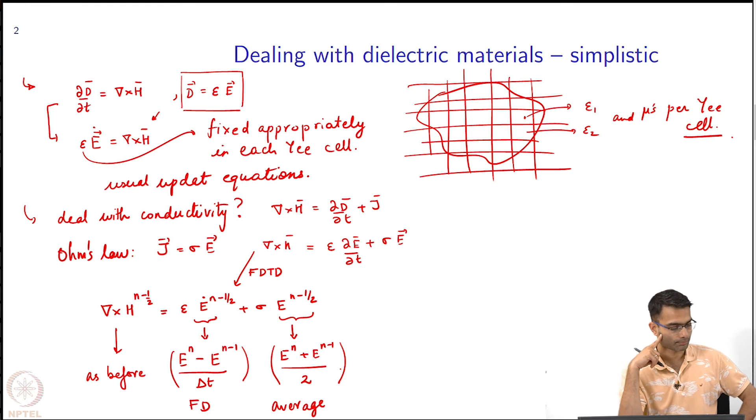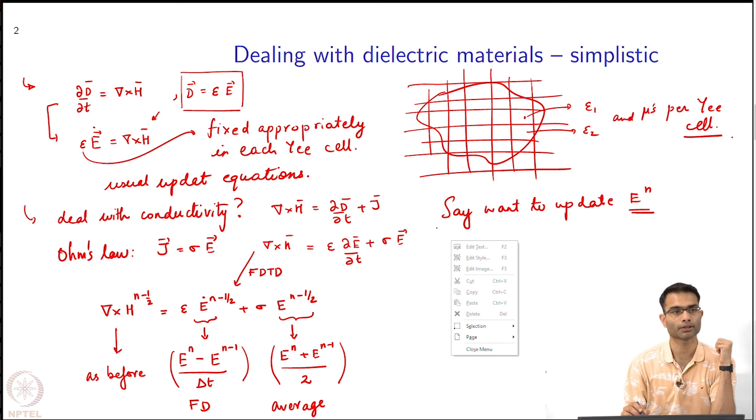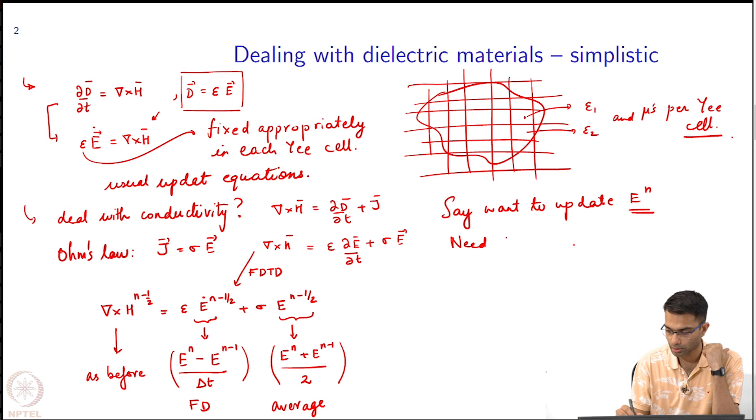Now, in your leap frog system, what all do you need? Supposing you want to update e n, what all do you need to know from this equation? I need to know, let us start from the farthest back in time, I need to know e n minus 1, and I need H n minus half.